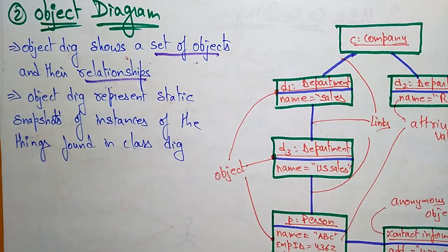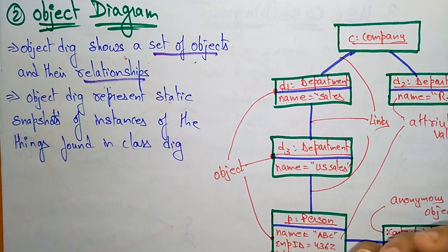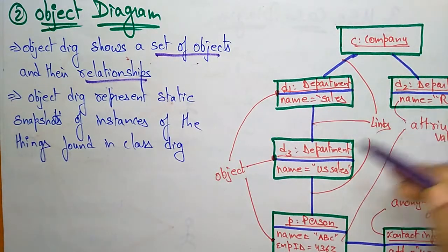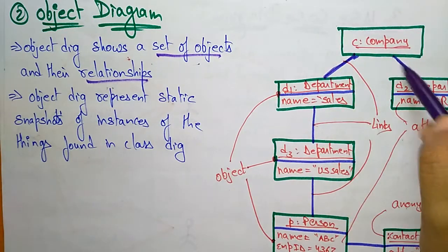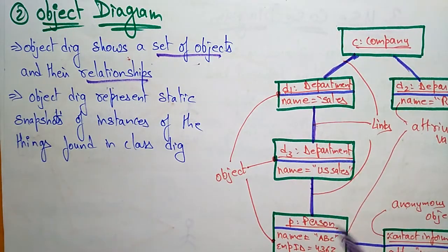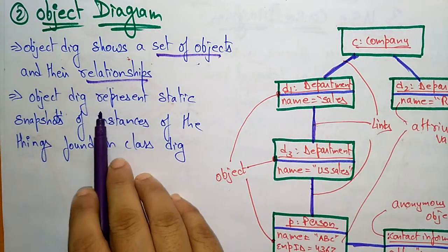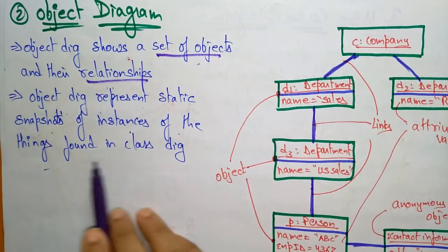To form any diagram, you need the things and you need the relationships to connect those things. So here, the set of objects are all the objects, and these objects are connected by links. These links are called relationships.